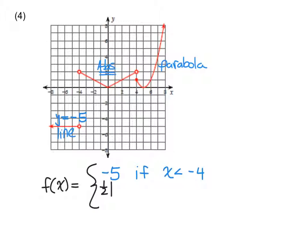Is there any shifting going on? No, so it's still at zero zero — it's just a stretch, in this case a shrink, of our parent function: the absolute value of x. Now where does this one live? Between negative four and four — it never gets to either of those.